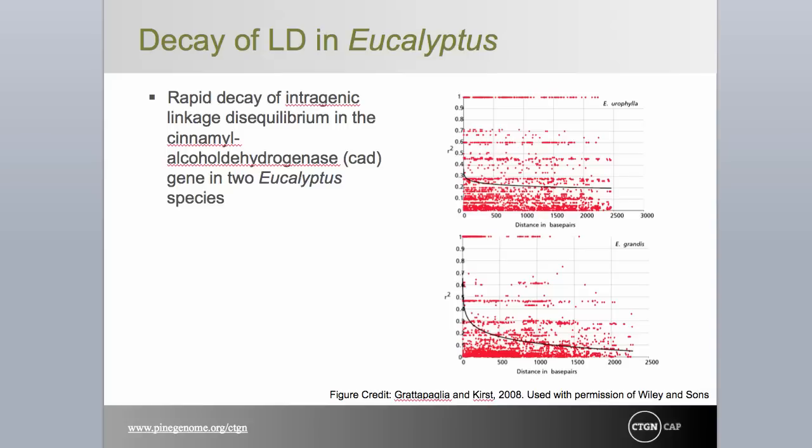In the largely outcrossing eucalyptus species, Eucalyptus grandis and Eucalyptus urophylla, LD appears to decay even faster than for Loblolly pine. These data are for two loci only and may not reflect the genome as a whole, because the rate of recombination varies dramatically across the genome and within linkage groups. It appears that for many species there are specific recombination hotspots and large areas where recombination is dramatically hindered. This was shown to be the case in Poplar, the first tree to be fully sequenced, where large sections of two chromosomes exhibit virtually no recombination.